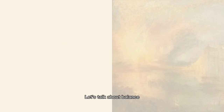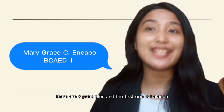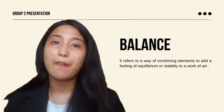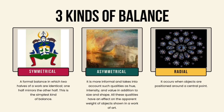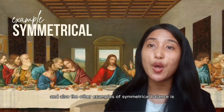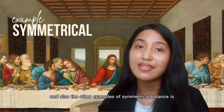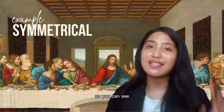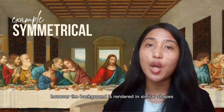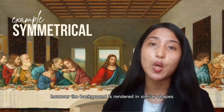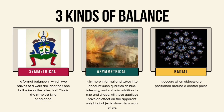The first principle is balance — the way of combining elements to add a feeling of equilibrium or stability to a work of art. The first kind is symmetrical balance, which means a formal balance in which two halves of a work are identical or one half mirrors the other. An example is The Last Supper by Leonardo da Vinci, where the background is rendered in similar shapes on the left and right-hand sides.